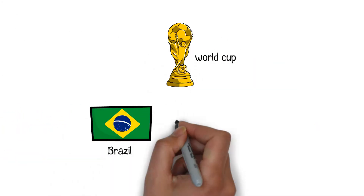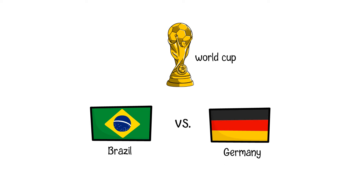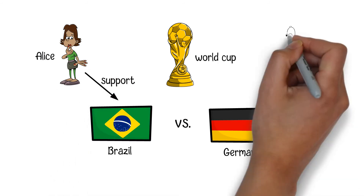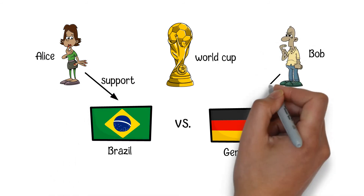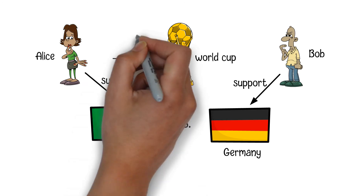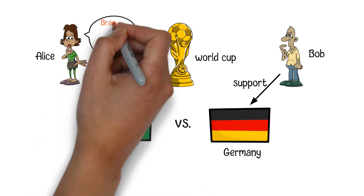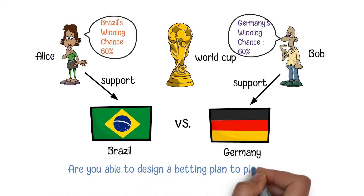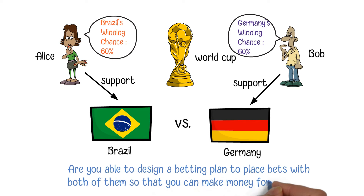For example, let's assume that the two teams to attend the Soccer World Cup final are Brazil and Germany. You have two friends, Alice and Bob, who support Brazil and Germany respectively. Alice thinks that Brazil will win the game and its probability to win is 60%. Bob believes that Germany will be the winner and its chance of winning is also 60%. Are you able to design a betting plan to place bets with both of them so that you can make money for certain?